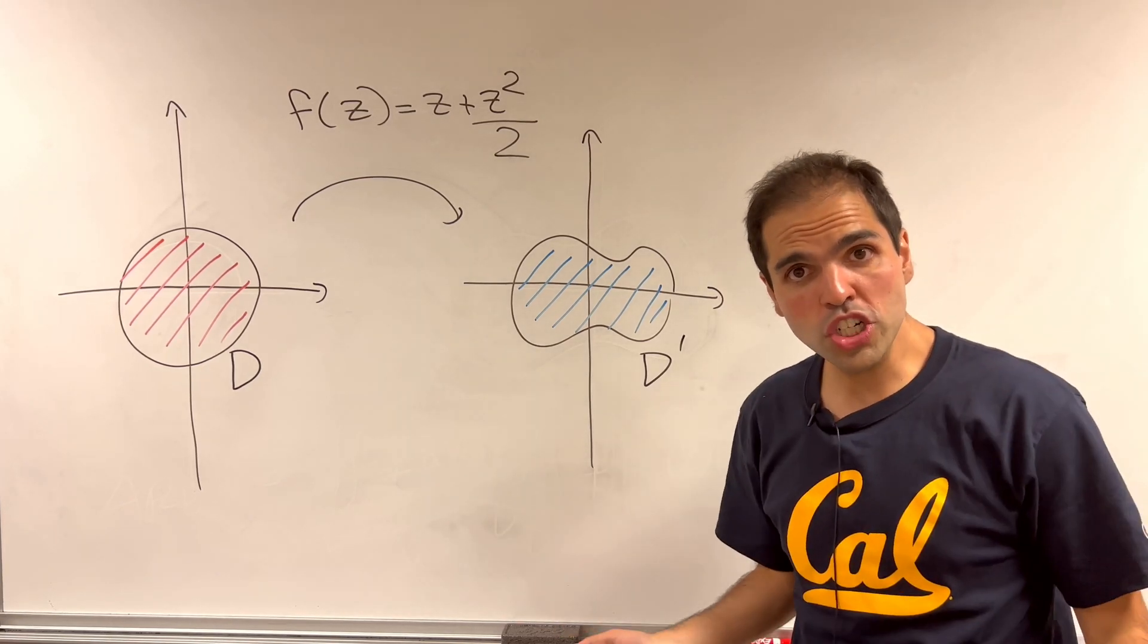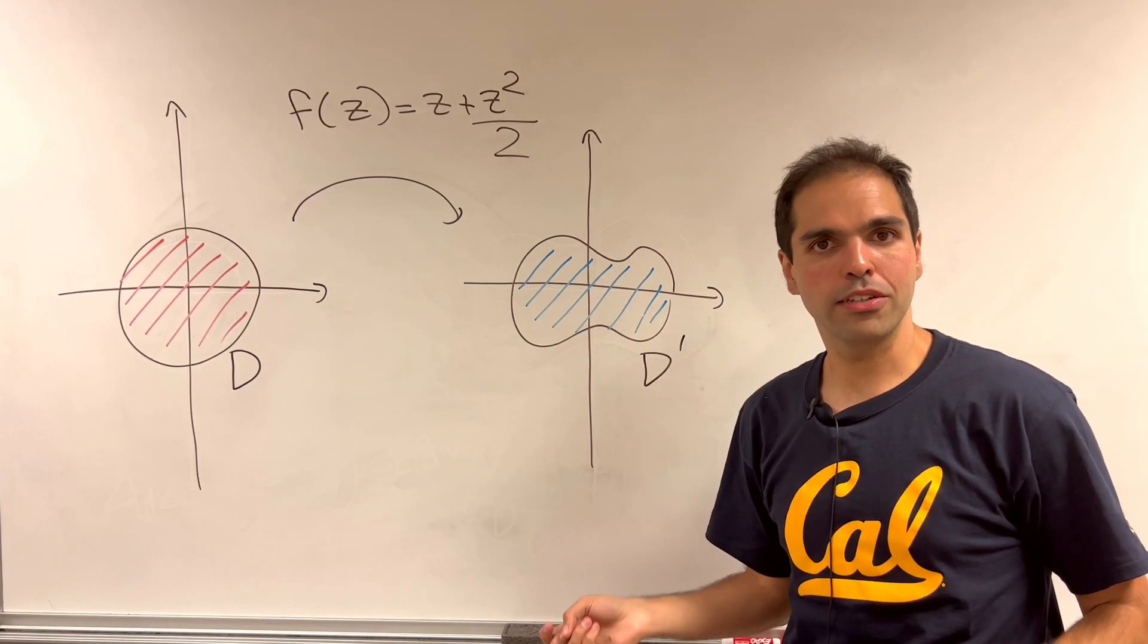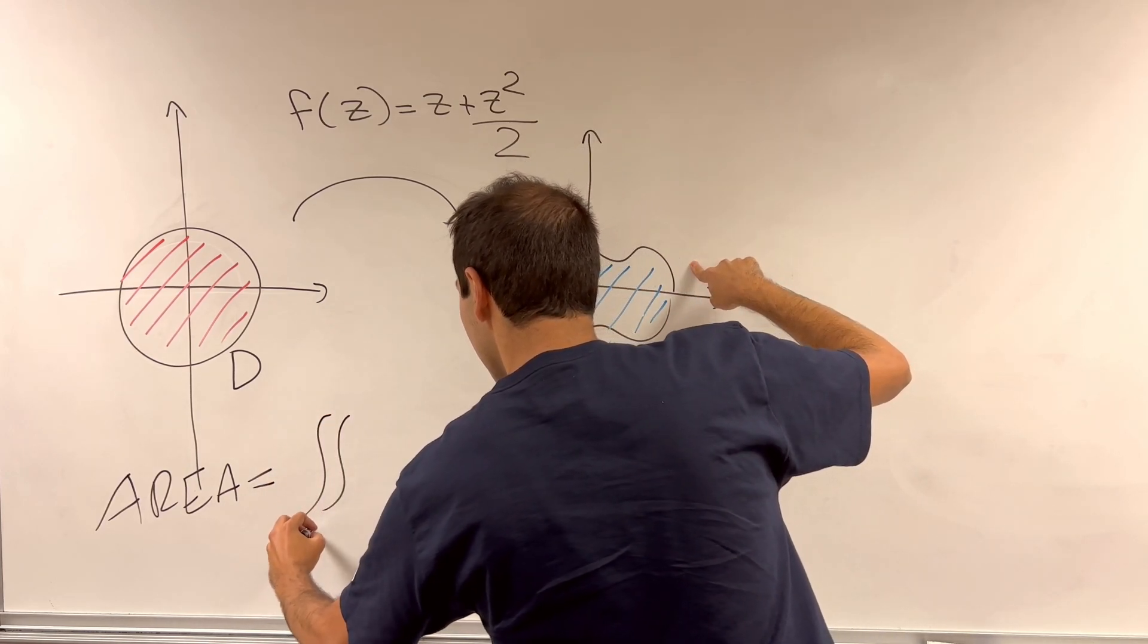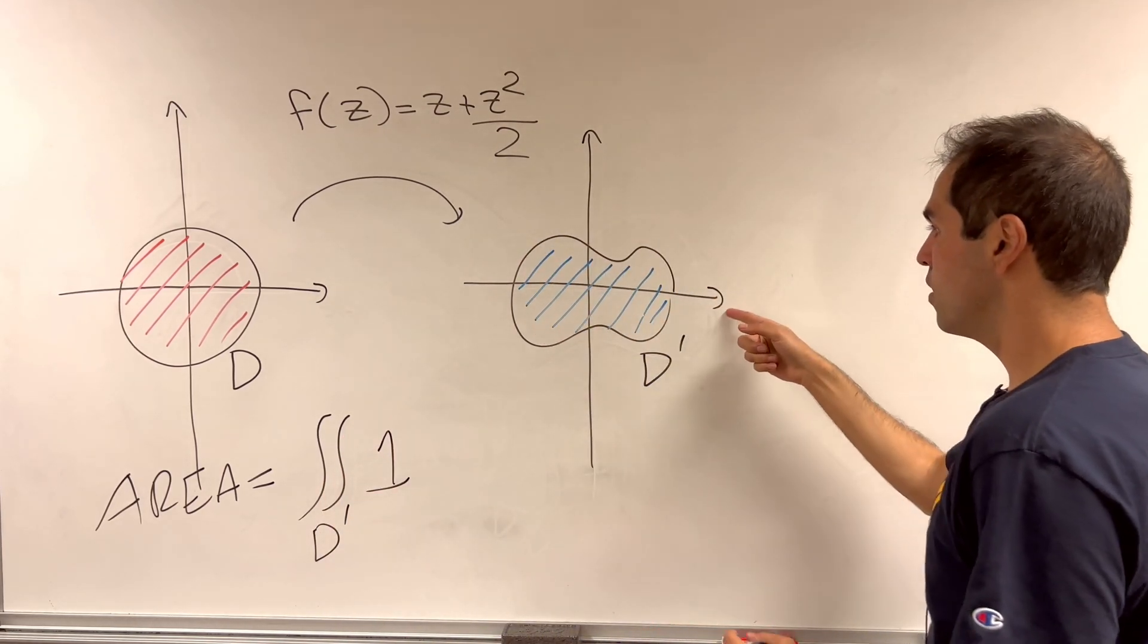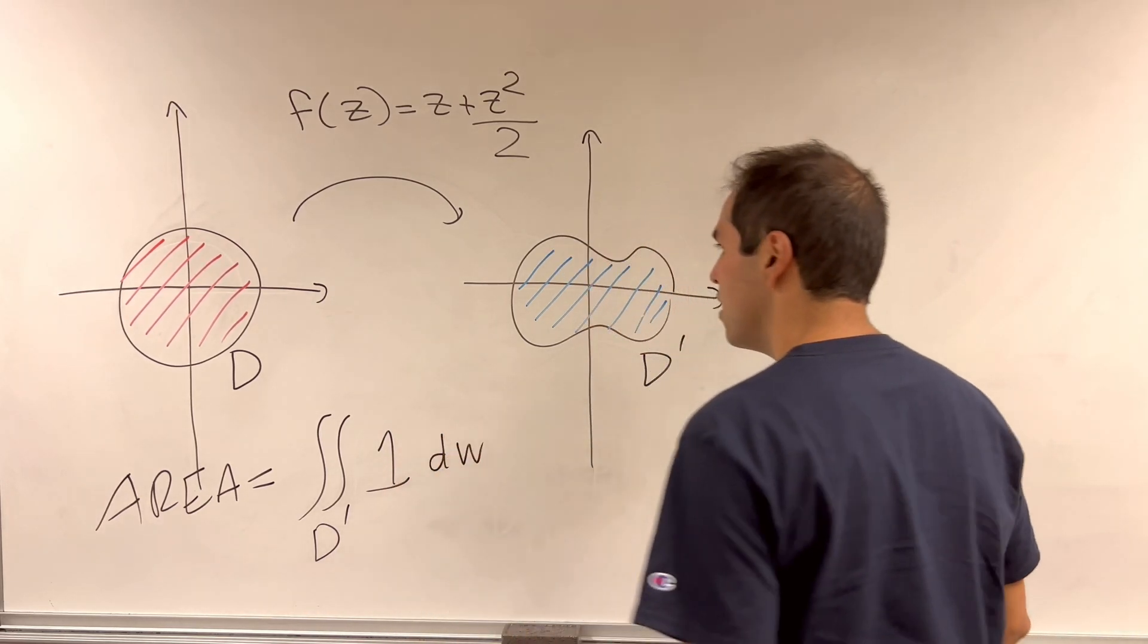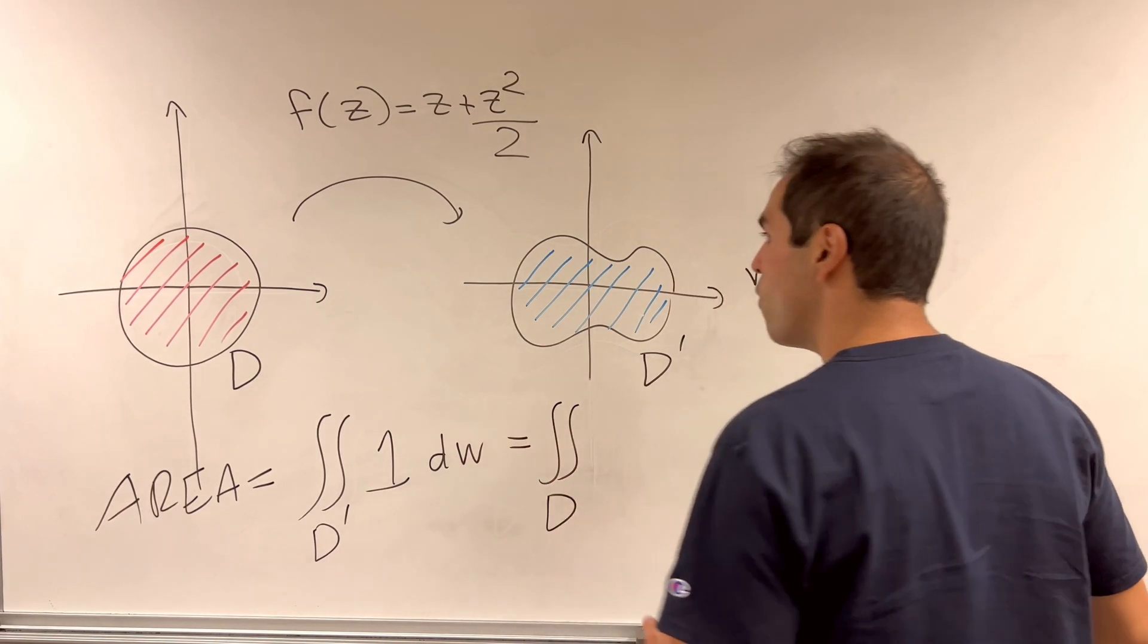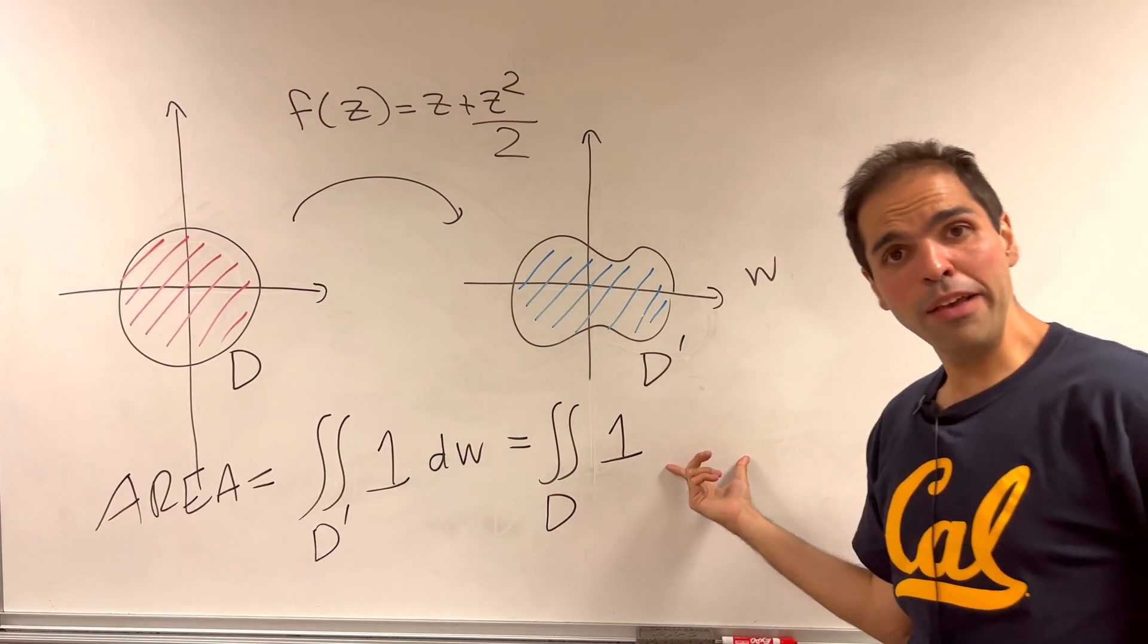This suggests to calculate this area we just need to use some multivariable techniques. More precisely, the area. All it is, it's the double integral of the function 1 over the Neumann oval with respect to the complex variable w. But by change of variables, this is the same thing as the double integral over the unit disc of the same function 1 times the Jacobian.